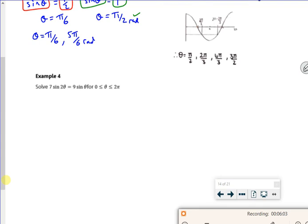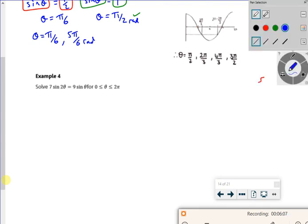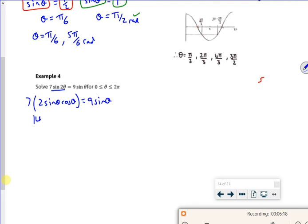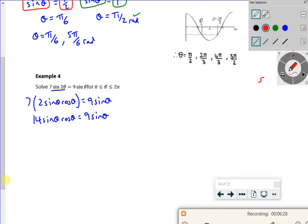Right. What colour am I on? Red. So I'm going to replace the sin 2 theta with 2 sin theta cos theta 9 sin theta. So 14 sin theta cos theta is 9 sin theta. Now what a lot of people do is cancel the sin theta and you mustn't do that. So do not cancel.